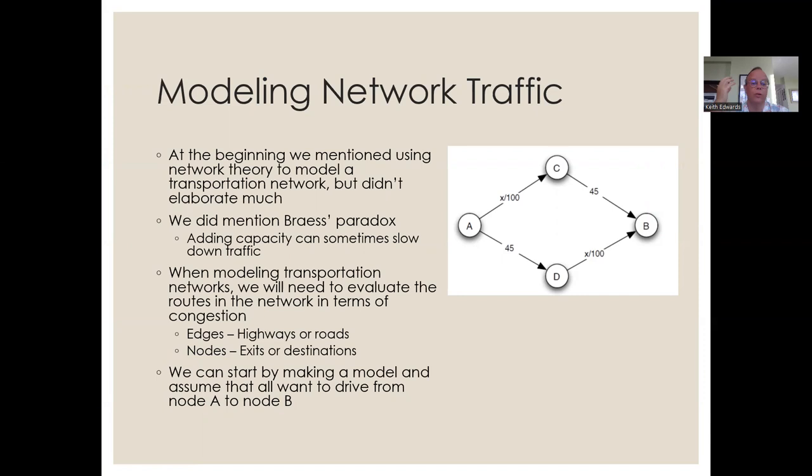At the beginning of the course, we mentioned using network theory to model a transportation network, but we didn't elaborate much on that point. We also mentioned Braess's paradox, which is the idea that adding capacity can sometimes actually slow down traffic. Building more roads or more routes can sometimes make things worse, and we'll see why that works out in this talk today.